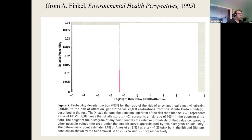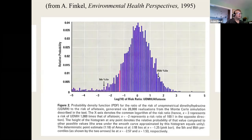Bruce Ames, who developed the Ames test for mutagenicity in the 1970s, famously and repeatedly said we shouldn't be so concerned about this chemical on apples — which made its way into apple juice that babies and kids were drinking — because peanut butter, which kids also eat, has aflatoxin in it. He said peanut butter was sometimes 17.9, sometimes roughly 20 times worse for you than apple juice. I looked at the uncertainty in the animal bioassay for Alar, the human epidemiology on aflatoxin, the variation in consumption, and the variability in concentration of these substances.